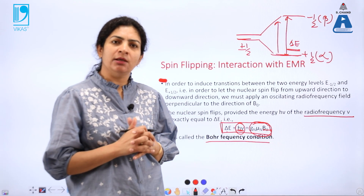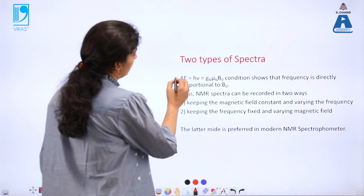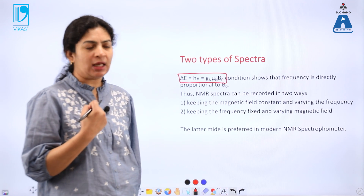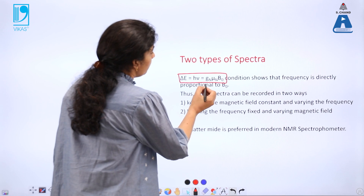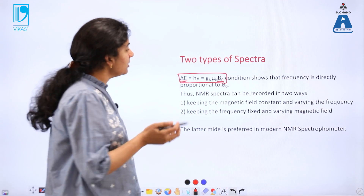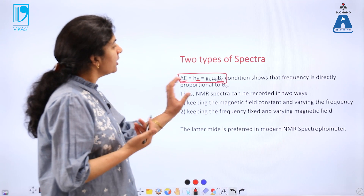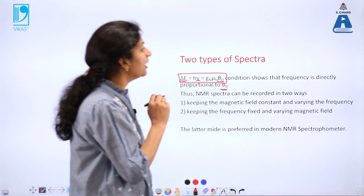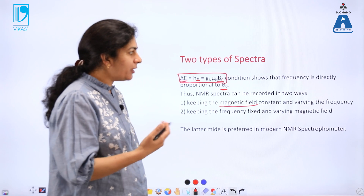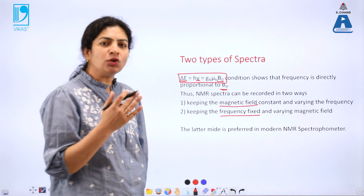We have now seen how a signal is observed in NMR spectra. Based on Bohr's frequency condition, let's understand in how many ways we can record the NMR spectrum. Since the energy gap is directly proportional to the strength of the magnetic field and is also related to the frequency of the electromagnetic radiation, we can either keep B constant and vary the frequency, or keep the frequency fixed and vary the strength of the magnetic field.